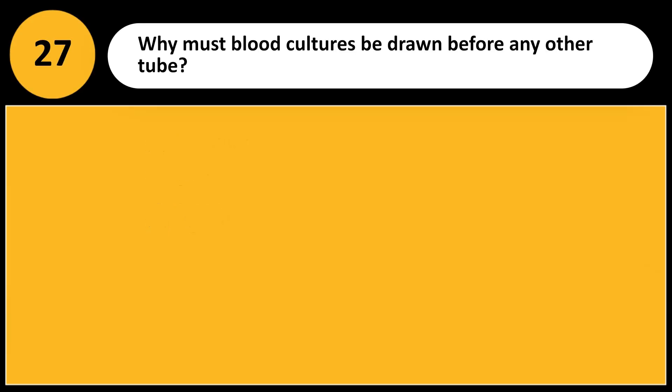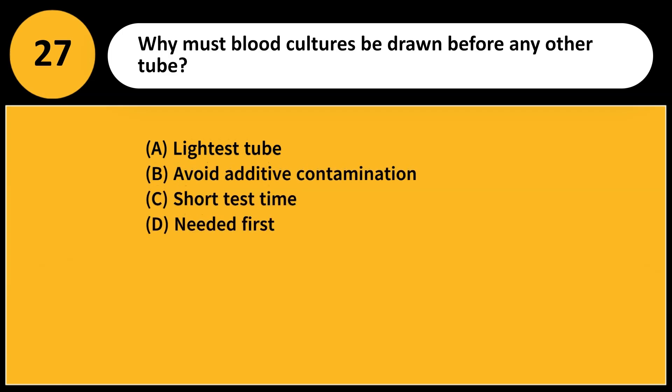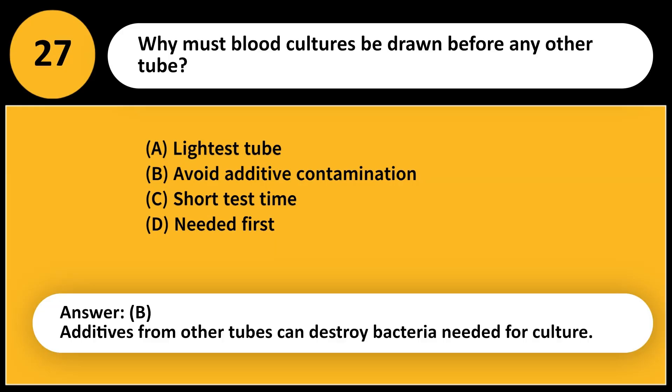Why must blood cultures be drawn before any other tube? A. Lightest tube. B. Avoid additive contamination. C. Short test time. D. Needed first. Answer: B. Additives from other tubes can destroy bacteria needed for culture.